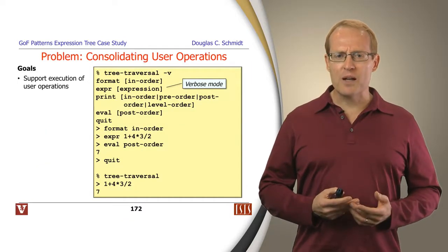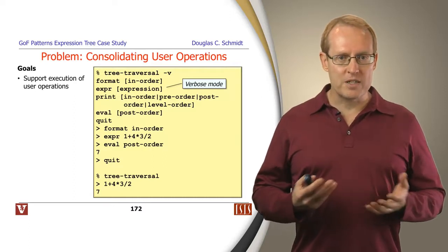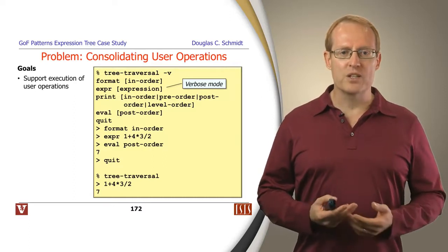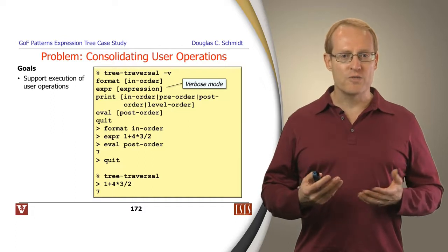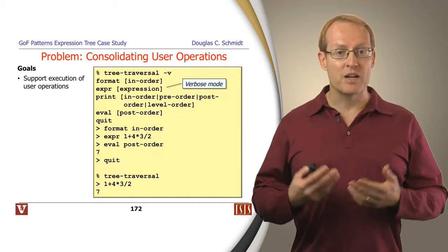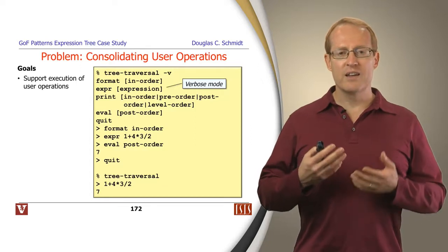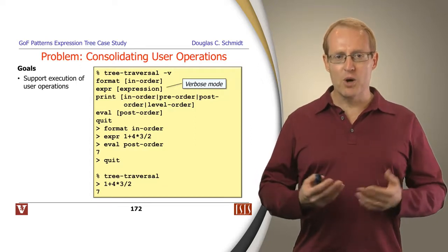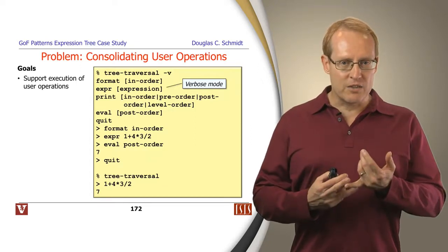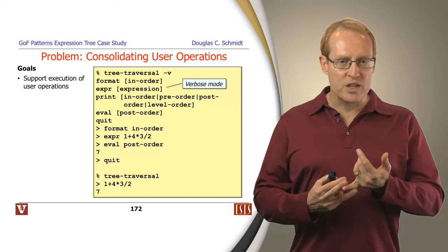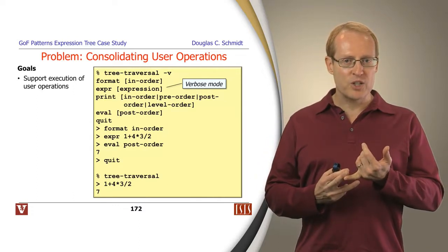Let's first start by talking about the problem. We want to be able to support various kinds of operations — execution of user operations from, say, the command line or from some kind of user interface. For instance, when we're running in verbose mode, we want to be able to allow the users to set the format, which indicates what the order is that they'll be typing the expressions in.